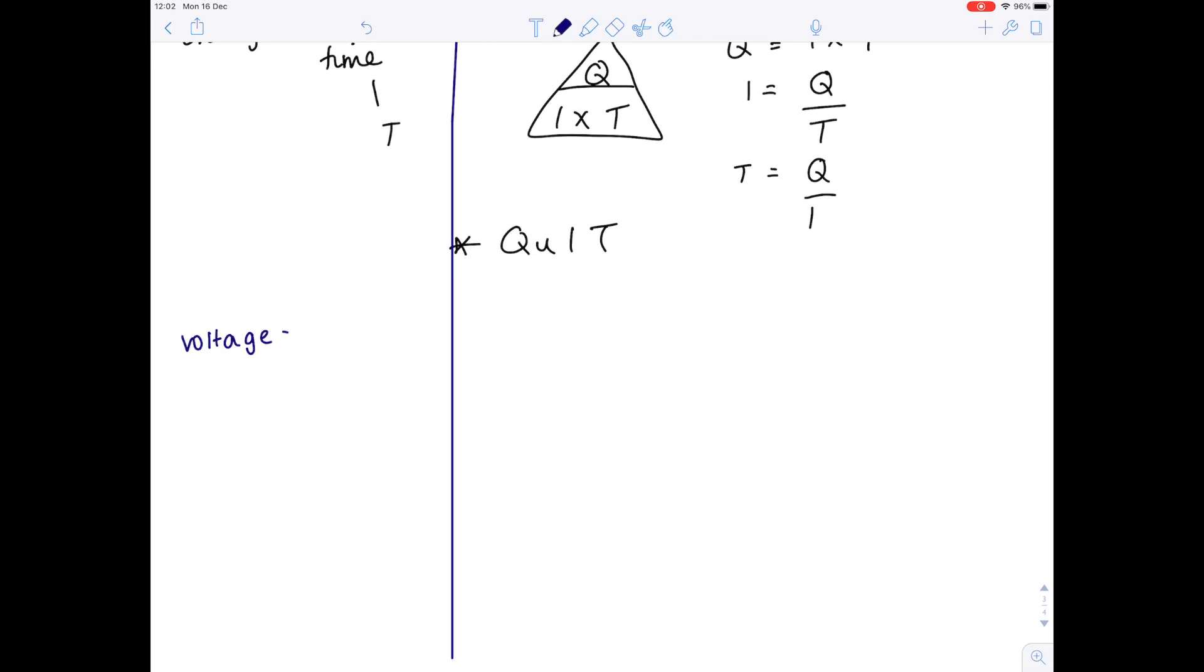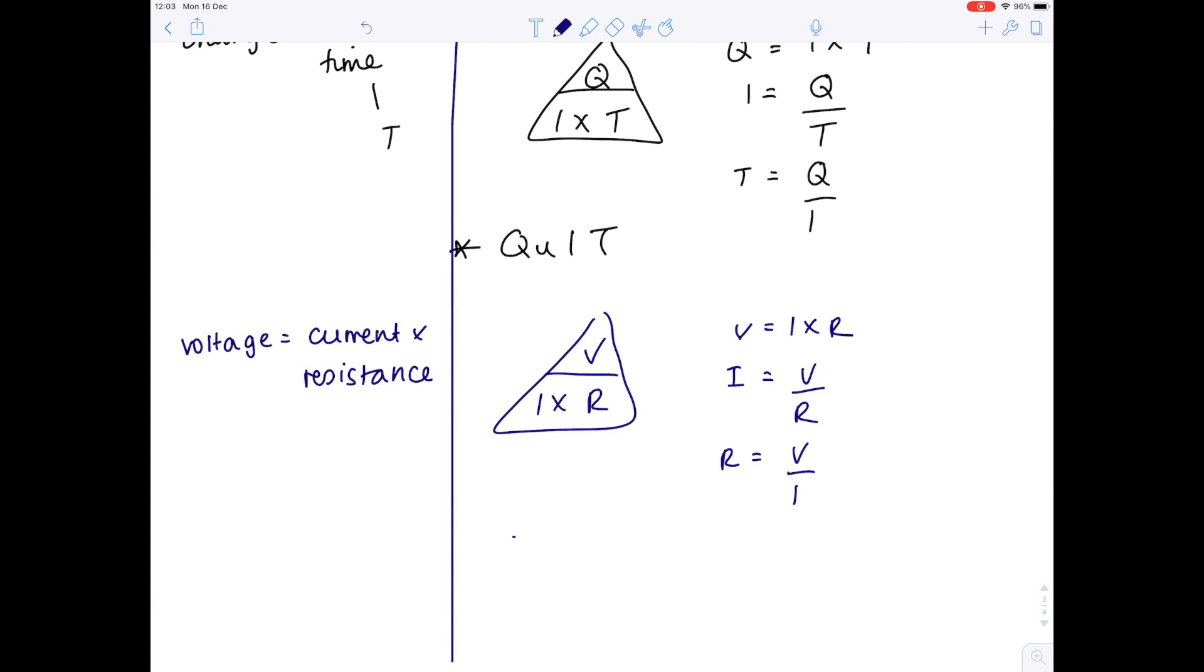Next up, voltage equals current times resistance. So therefore, voltage equals current times resistance. Current equals voltage divided by resistance. And resistance equals voltage divided by current. This sounds weird, but I wanted to be a vet when I was younger. So vets in rain was how I would have remembered the order of that particular triangle.